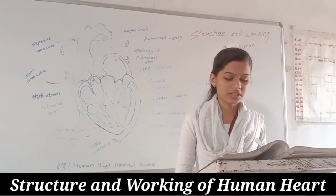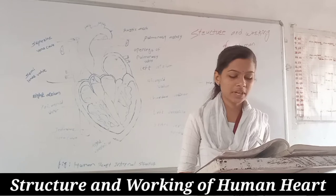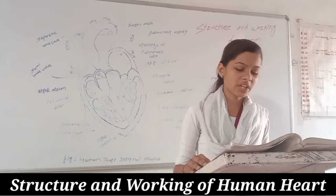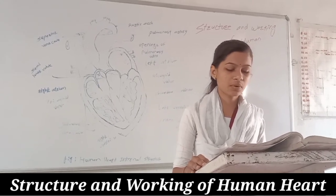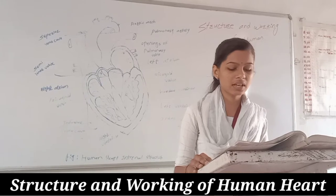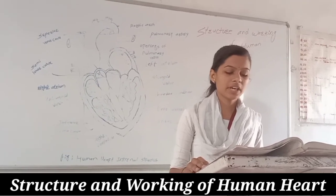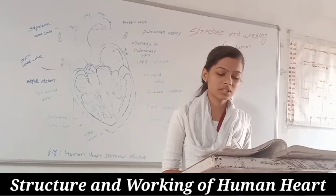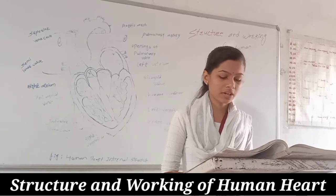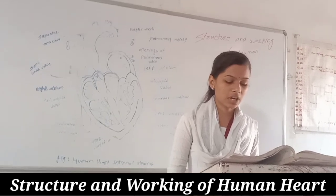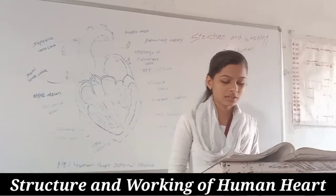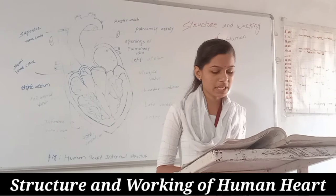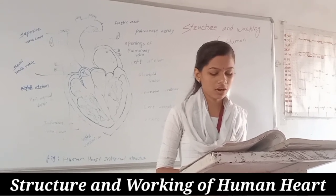The right atrium is larger in size than the left atrium. From the right ventricle arises the pulmonary trunk, while from the left ventricle arises the systemic aorta. The pulmonary trunk and systemic aorta are connected by the ligamentum arteriosum, which represents the remains of the ductus arteriosus of the foetus.